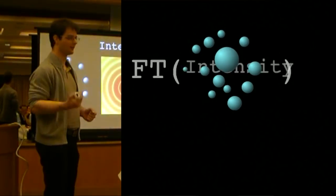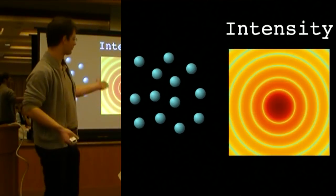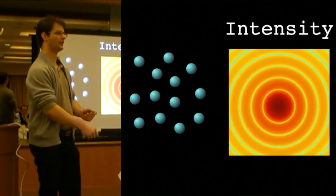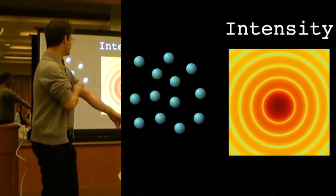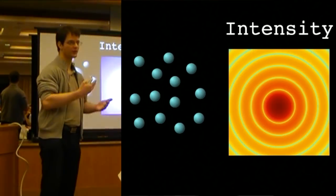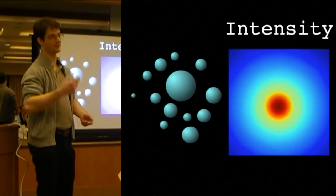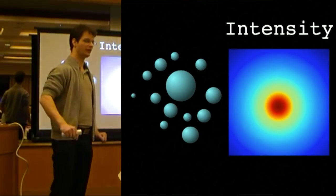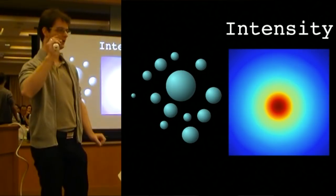What that looks like for a monodispersed structure, for example, monodispersed spheres, is shown here on the right. It's an oscillating function repeating itself many, many times over. Now, if we have a polydispersed structure, all these oscillations start overlapping and that will disappear. So we get a smooth intensity decay as we go further out.